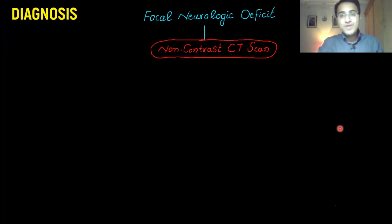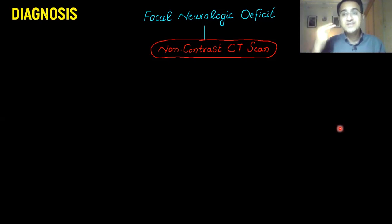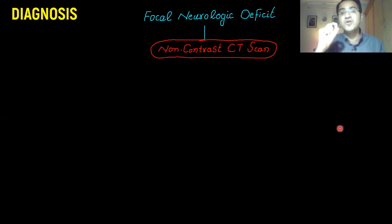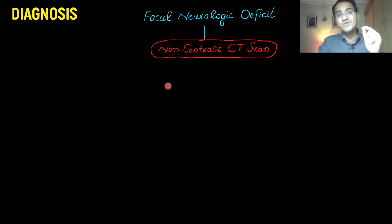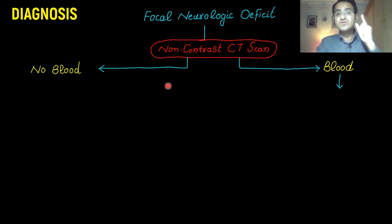When a patient presents with a focal neurological deficit — unilateral weakness, paralysis, sudden loss of vision, or severe headache — the first thing to do is order a non-contrast CT scan. Non-contrast CT gives results more rapidly. We are looking for blood on the CT scan: if blood is present, it points toward hemorrhagic stroke; if there is no blood, it is ischemic stroke.